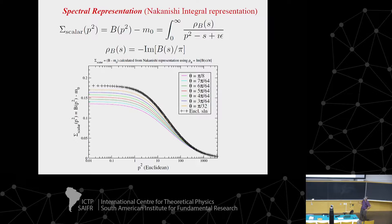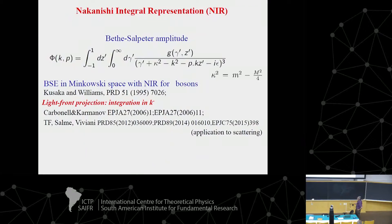You can also look at the mass function. We computed the mass function for P squared, and for different angles we could get the imaginary part of the self-energy. Indeed, when we use the integral representation and the angle is very small, we really approach the solution in Euclidean space. This is what we got — we are at this point now. The idea is to compare both methods: the one where we get the solution in Minkowski space, and this rotation.